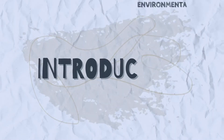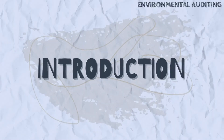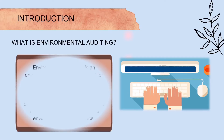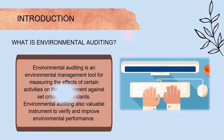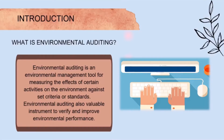In this video, we will share about environmental auditing. First is the introduction of environmental auditing. Environmental auditing is an environmental management tool for measuring the effects of certain activities on the environment against a set of criteria or standards. Environmental auditing is also a valuable instrument to verify and improve environmental performance.